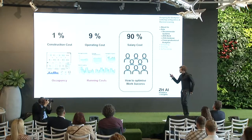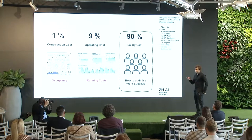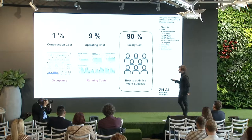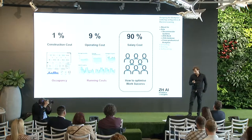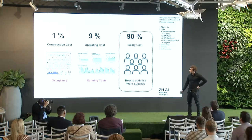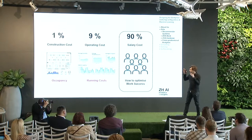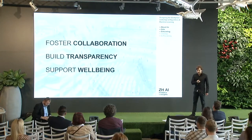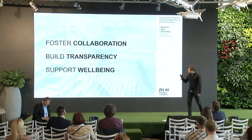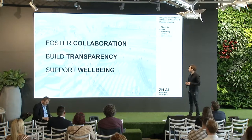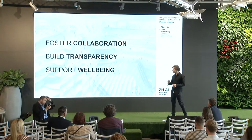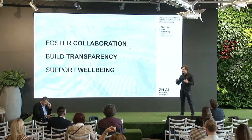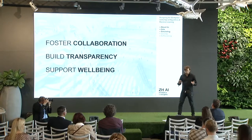This graph shows the life cycle of a building. We spend about 1% on construction cost, 9% on operating cost, but 90% on salary cost for the people who actually work in the office building. To divert clients' attention from the 1% cost, we take interest in that 90%. We believe that to help people be more productive, collaboration is a key word — we find new ways to foster collaboration, build transparent environments where people are creative, and where they feel well.